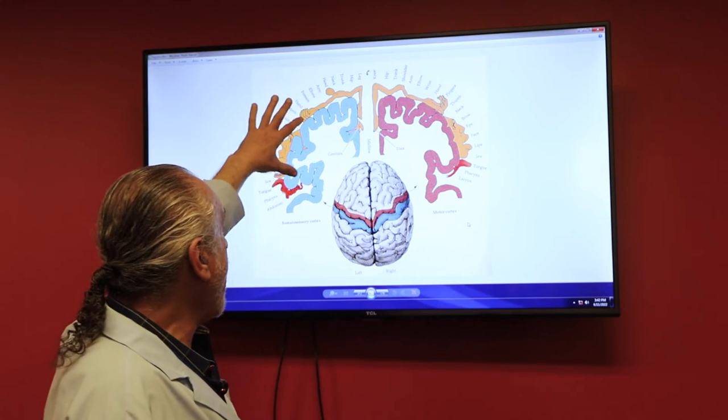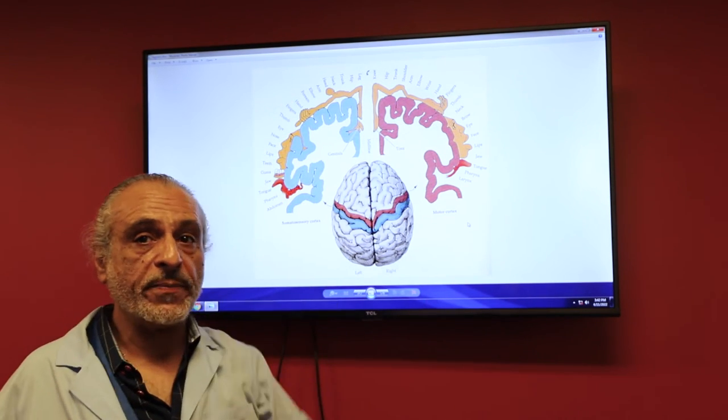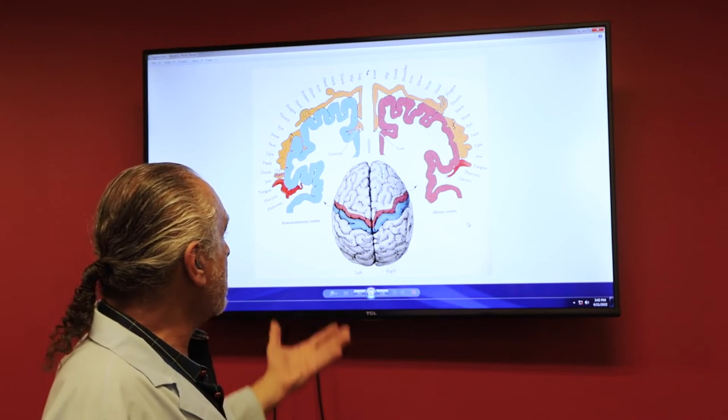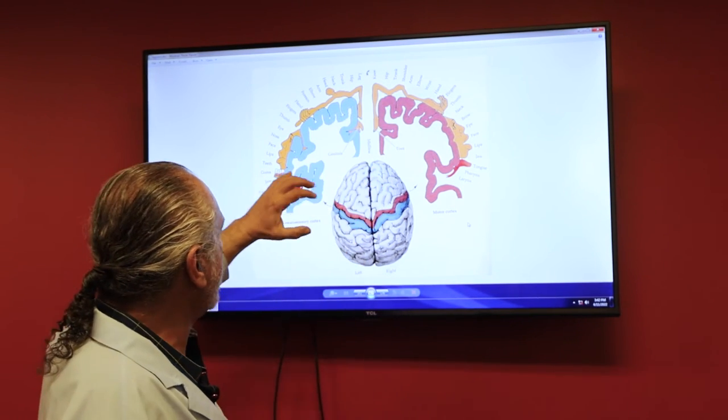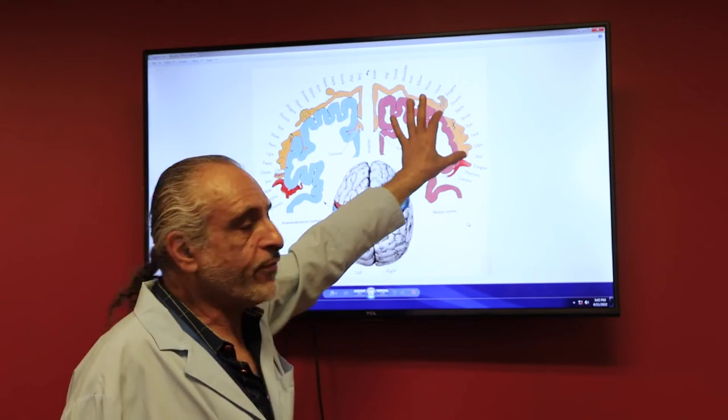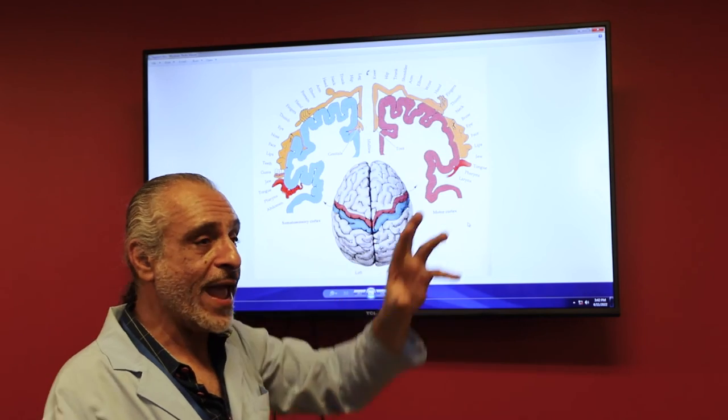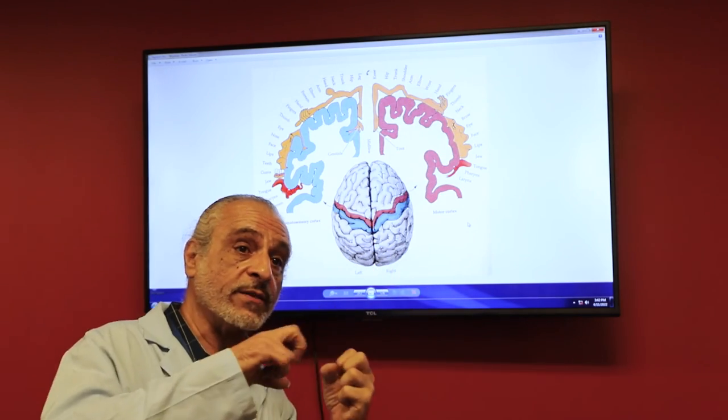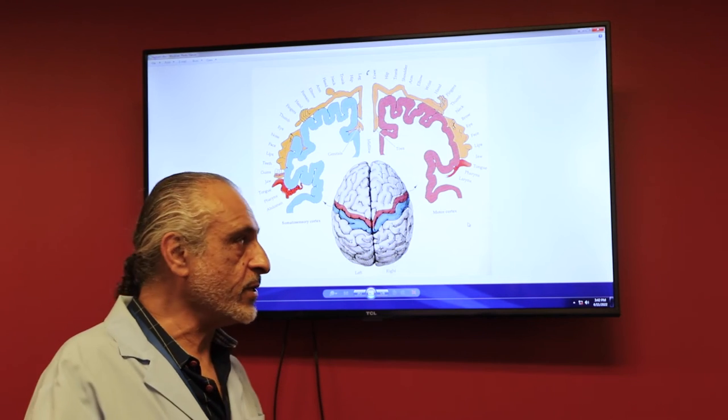Now can you guess why the face is so much bigger and has a larger representation on the brain than, let's say, the trunk and the hip? Because there's so much that we do with our face and our lips and nerve endings there, or so much we can do with our hands. All these motions, very fine movements, need heavier representations on the brain.